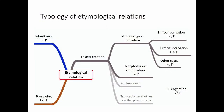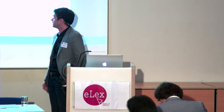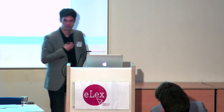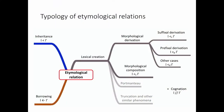Etymological relations can be of different types. Direct inheritance is the most straightforward one. Borrowing is quite frequent as well. Then you have all the different types of lexical creation mechanisms, such as morphological derivation and morphological composition. In the work I'm presenting here, I have discarded, at least for now, portmanteau words and truncation and other more complex phenomena.